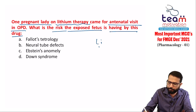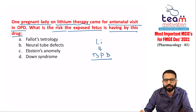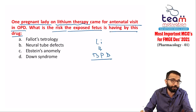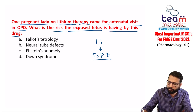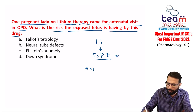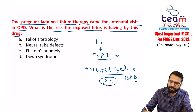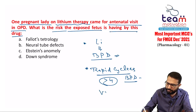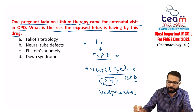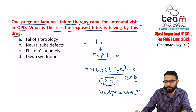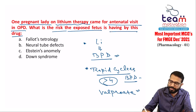Lithium is the best drug for bipolar disorder. In bipolar disorder, the patient cycles between mania and depression. Lithium is overall best. In rapid cycling bipolar disorder — more than four episodes per year — the best mood stabilizer is valproate. Lithium during pregnancy causes Ebstein's anomaly.